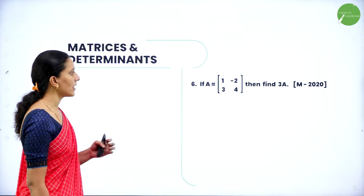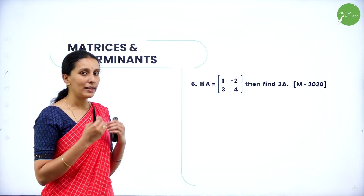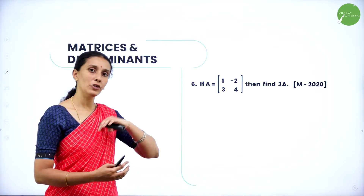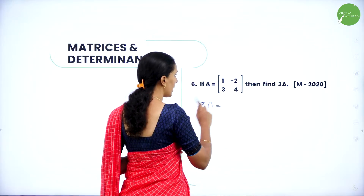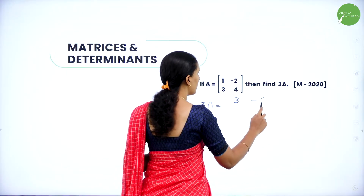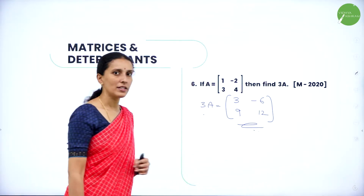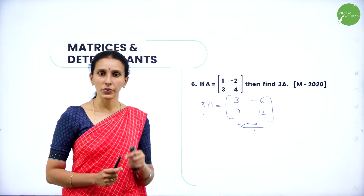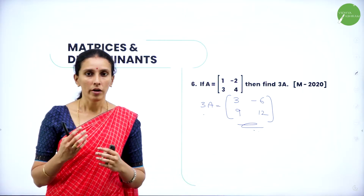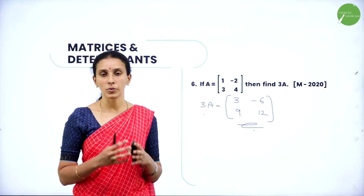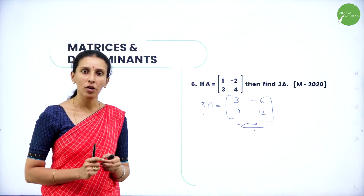If A = [1, -2; 3, 4], find 3A. When multiplying a scalar with a matrix, multiply to all the elements. So 3A = [3, -6; 9, 12]. This was asked in the 2020 paper. These types of questions — operations on matrices and transpose of matrices — will arise for one mark. Simple evaluation of determinants may also appear for one mark.